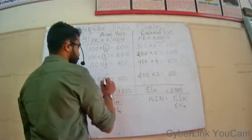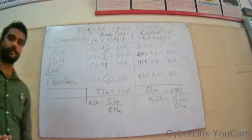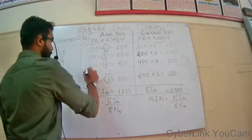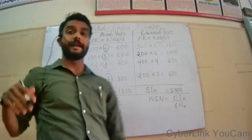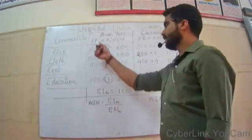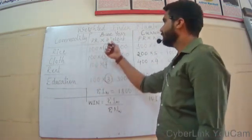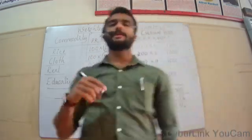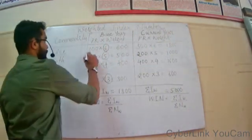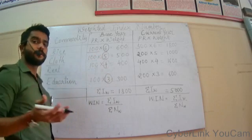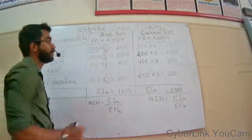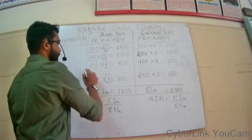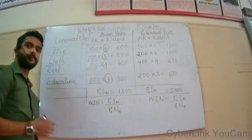In simpler terms, let's say 100 units is given to all these products — that is the price relative. This 100 is the price relative, multiplied by the weightages given to all these commodities according to their importance in daily life. 100 is a pure number after calculating base year prices. So 100 into 6 is 600, 100 into 5 is 500, 100 into 4 is 400, and 100 into 3 is 300.